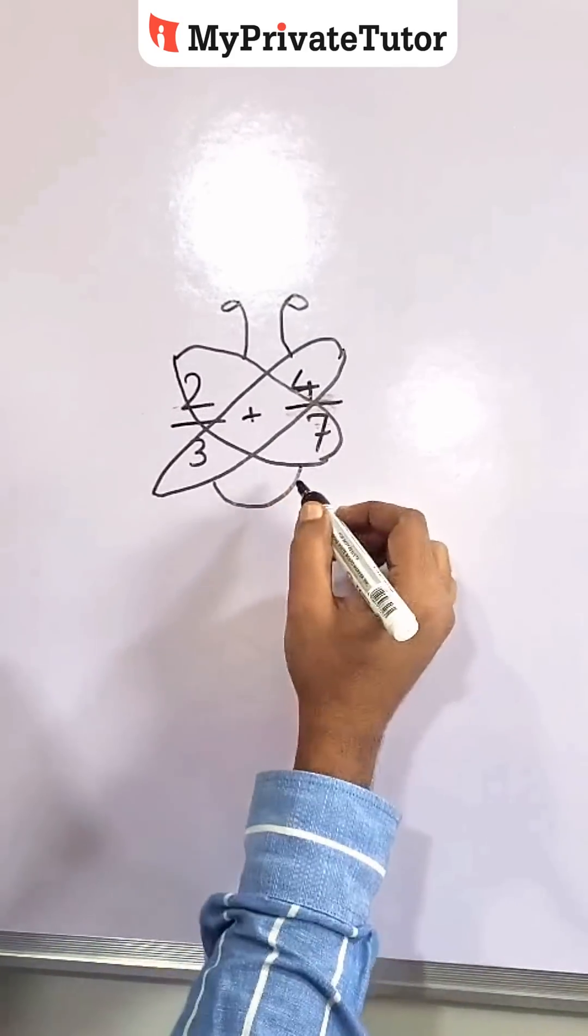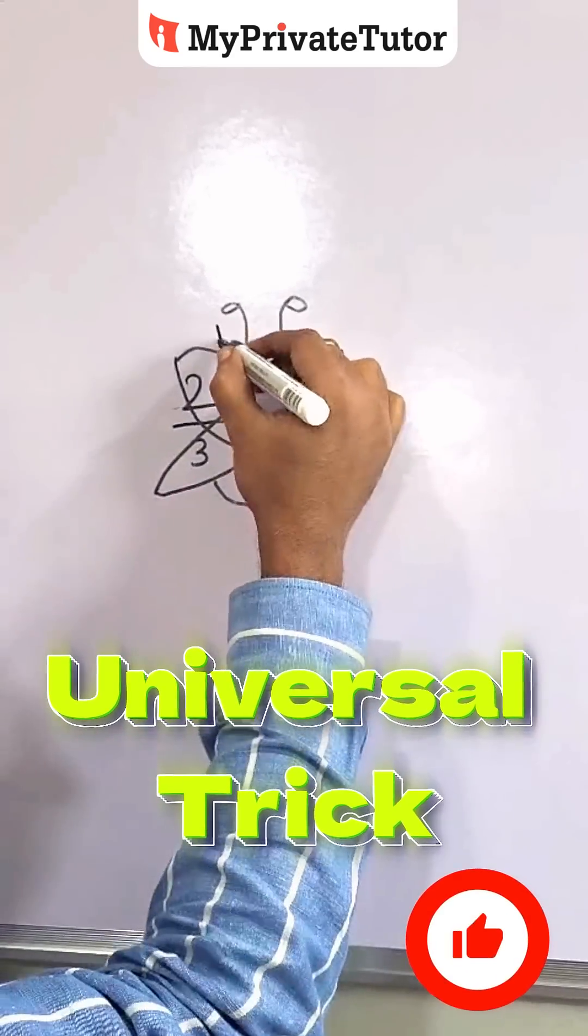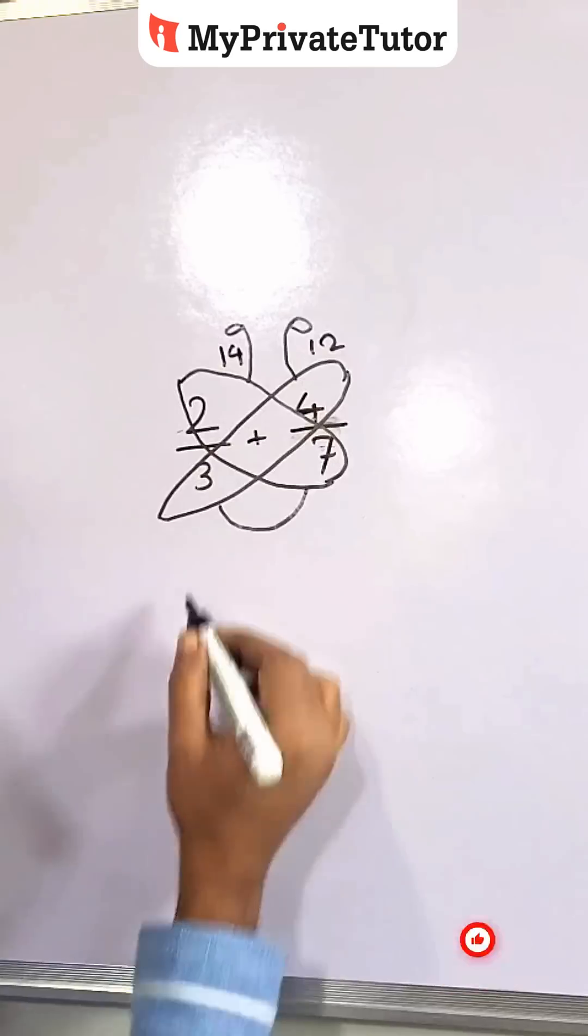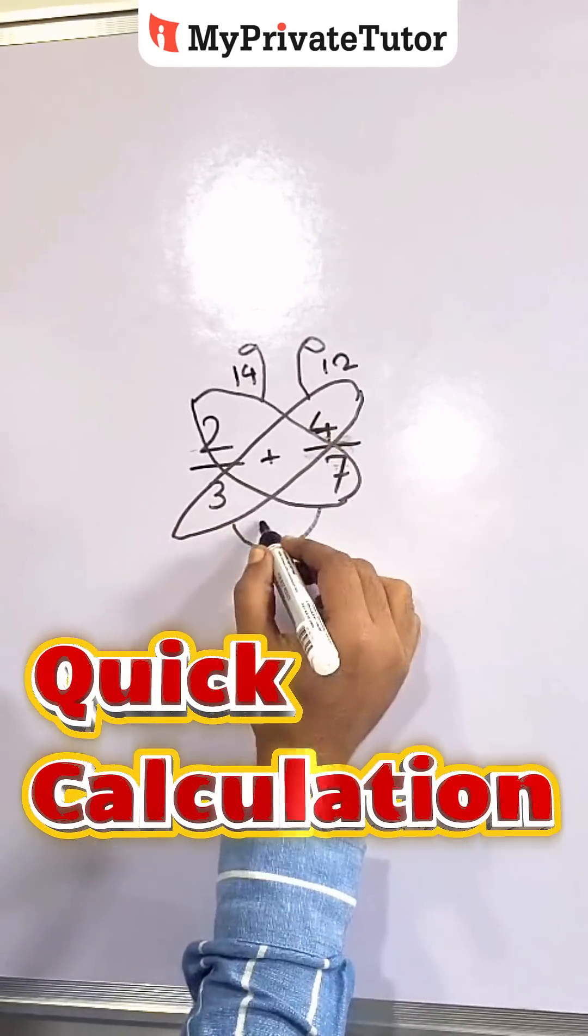Now multiply the numbers on each wing. 7 into 2 is 14. 3 into 4 is 12. Now multiply the denominators and put it inside the body. 7 times 3 is 21.